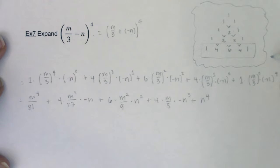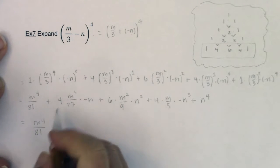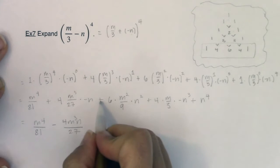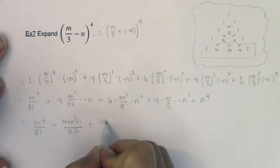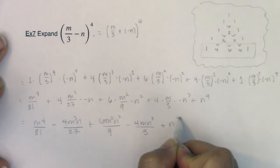All right, now let's go ahead and simplify this a little bit more. So we've got m to the fourth over 81 that I don't need to do anything to. This is going to be minus 4m cubed n over 27. This will be plus ultimately, 6m squared n squared over 9. And this will be a minus 4mn cubed over 3 plus n to the fourth.